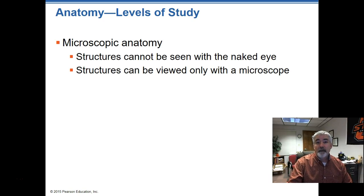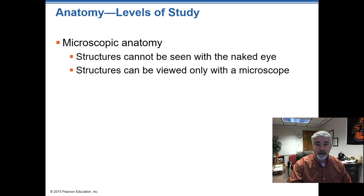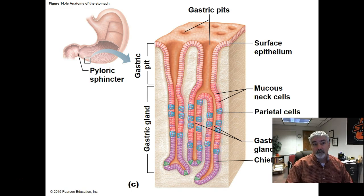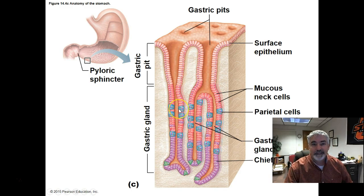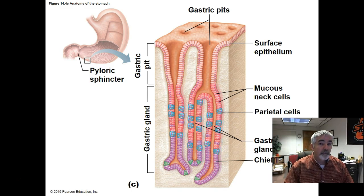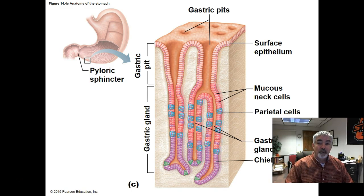The other type of anatomy is microscopic anatomy — anatomy that can't be seen with the naked eye and requires a microscope. Fortunately, they've provided us with pictures of those structures. We can see all the way down to the cellular level — for example, cells lining the stomach gland that makes the acids that digest the food we eat. Most of what we're doing will focus more on the microscopic anatomy level than on gross anatomy.